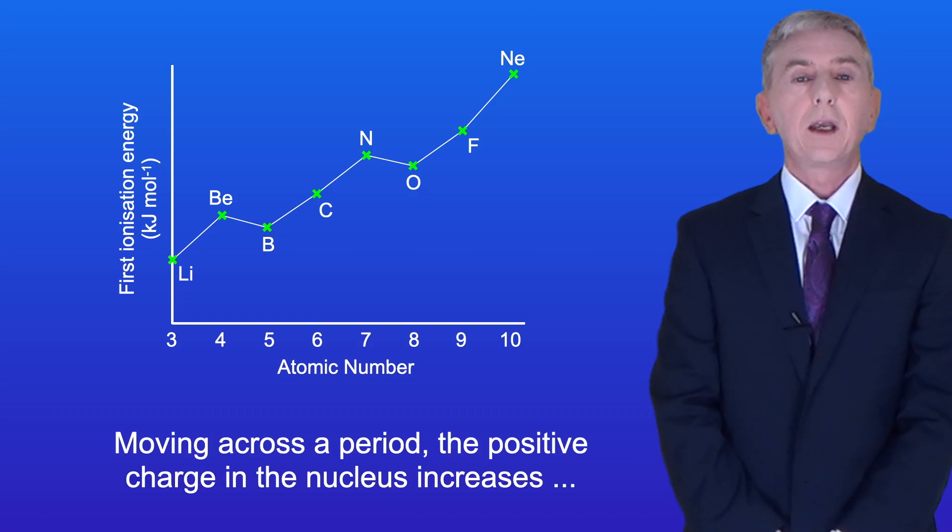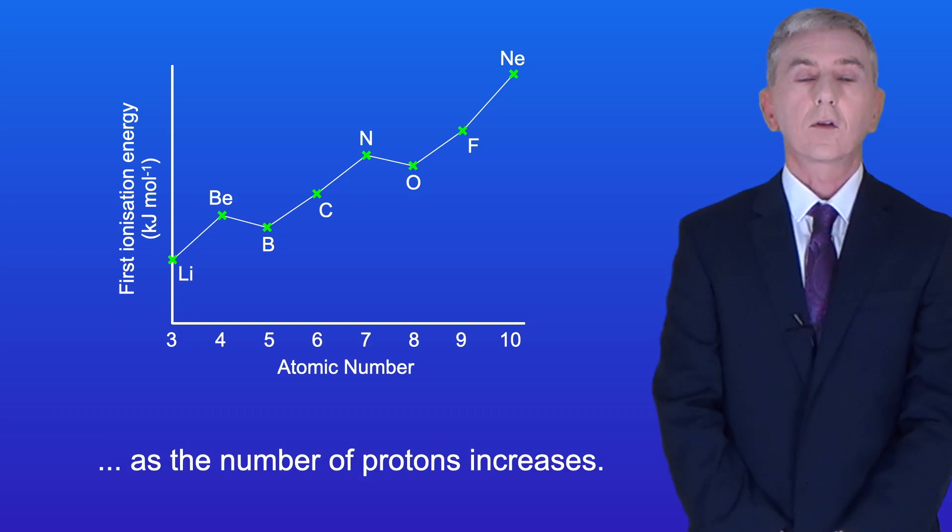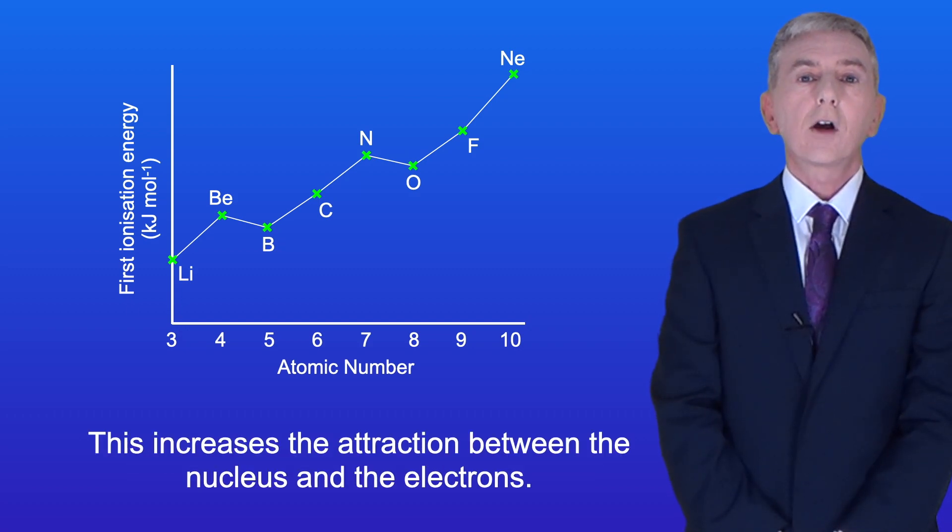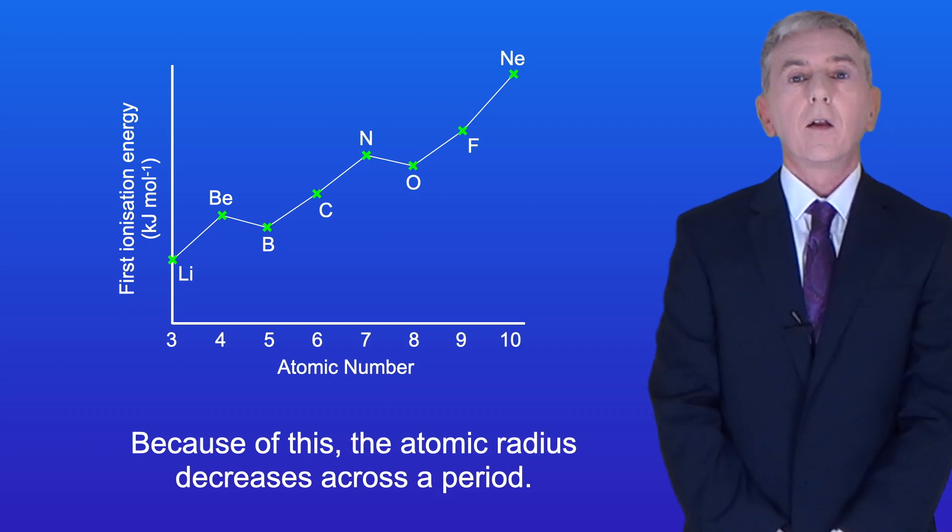Moving across a period the positive charge in the nucleus increases as the number of protons increases. This increases the attraction between the nucleus and the electrons. Because of this the atomic radius decreases across a period.